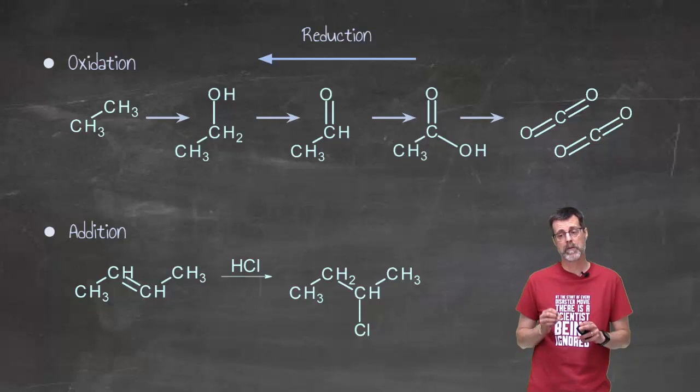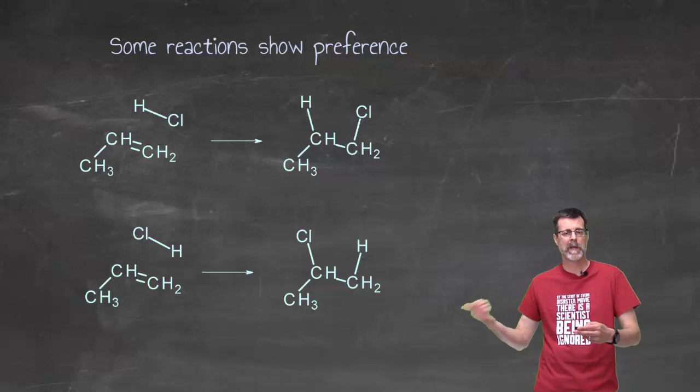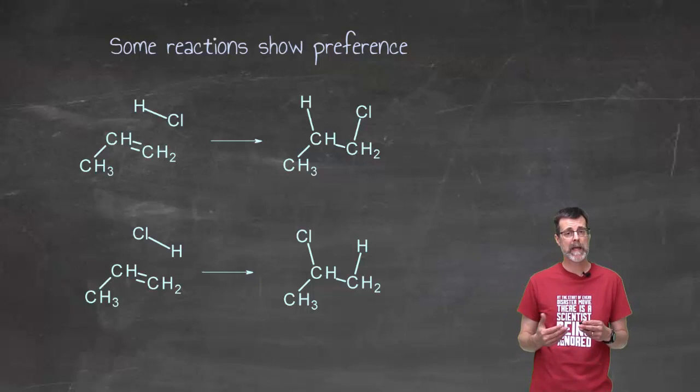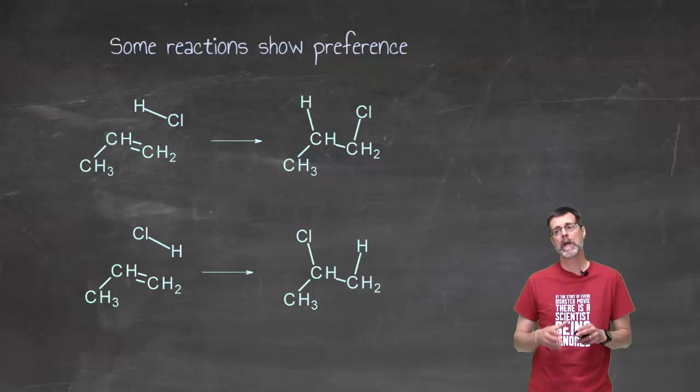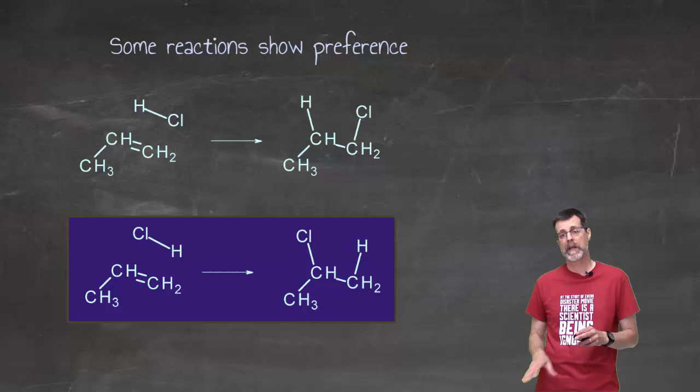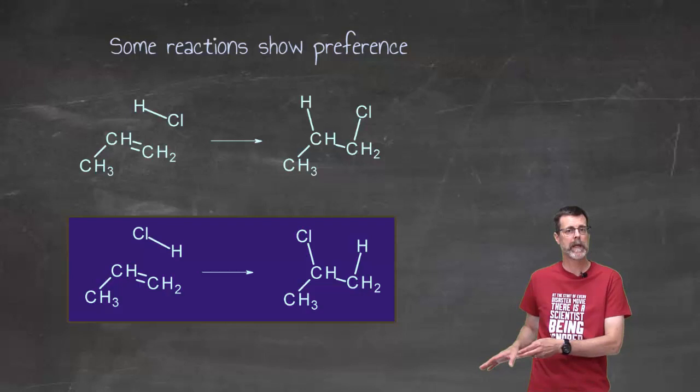Now there are reactions that show a preference. I didn't really have any back there. But if I look at this one, where I've got the carbon-carbon double bond on the end, I could orient my hydrogen chloride two different ways, left to right, right to left. And one of those is going to be more likely to happen. Now we'll talk about the why it is later on, but for our purposes right now, the bottom reaction is much more likely to happen. And if you're wondering why is that, later. We'll do that later.